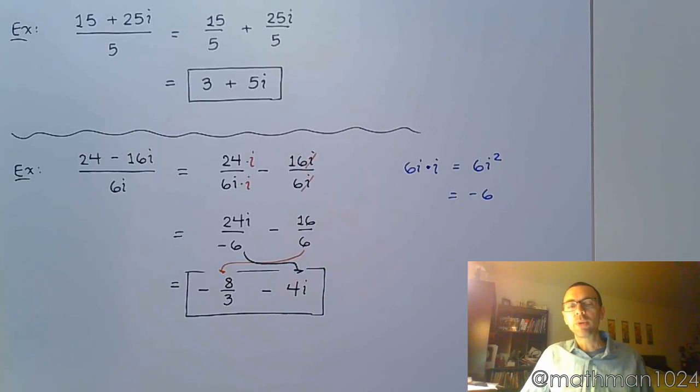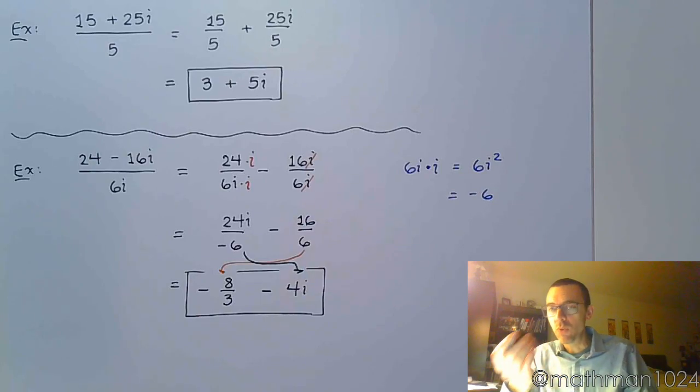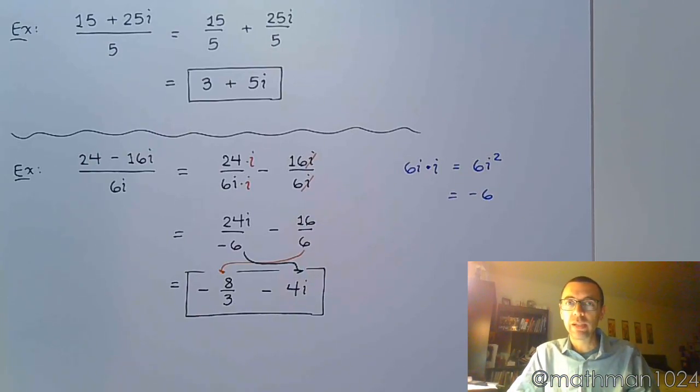So, as long as your denominator is a single piece, we're going to be okay. But in the next video, we're going to examine what happens when the denominator is made up of two pieces, made up of a real part and an imaginary part. The hint, complex conjugates.